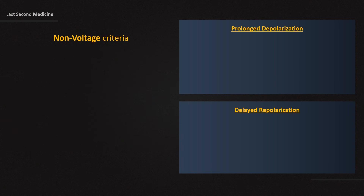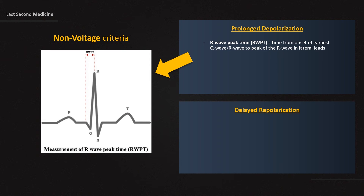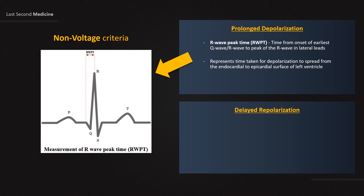What is R-wave peak time, or RWPT? R-wave peak time is the time from the onset of the earliest Q-wave or R-wave to the peak of the R-wave in the lateral leads. It represents the time taken for depolarization to spread from the endocardial to the epicardial surface of the left ventricle. R-wave peak time is said to be prolonged if it is greater than 45 ms.